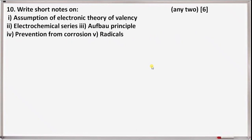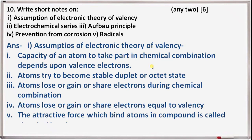Next question 10: write short notes on the assumptions of the electronic theory of valency. The capacity of an atom to take part in chemical combination depends upon valence electrons. Atoms try to become stable by achieving a duplet or octet state. Atoms lose, gain, or share electrons during chemical combination. The number of electrons lost, gained, or shared equals the valency. The attractive force which binds atoms in a compound is called a chemical bond.